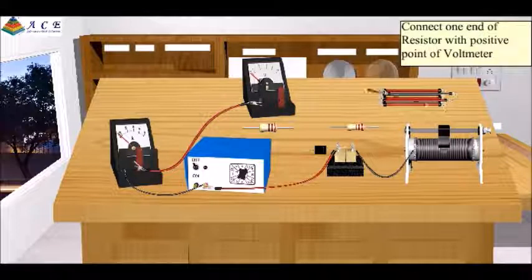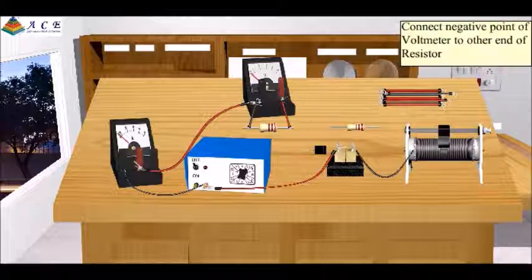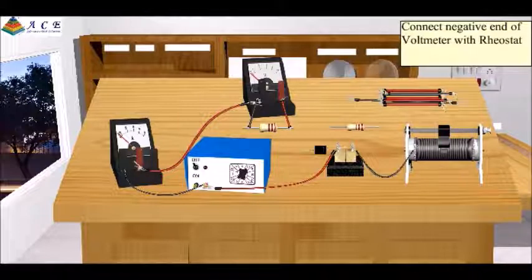Connect one end of the resistor with the positive point of the voltmeter. Connect the negative point of the voltmeter to the other end of the resistor. Connect the negative end of the voltmeter with the rheostat.